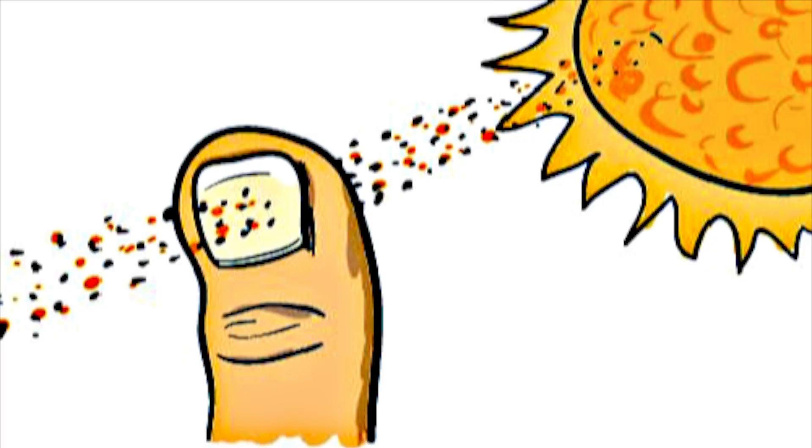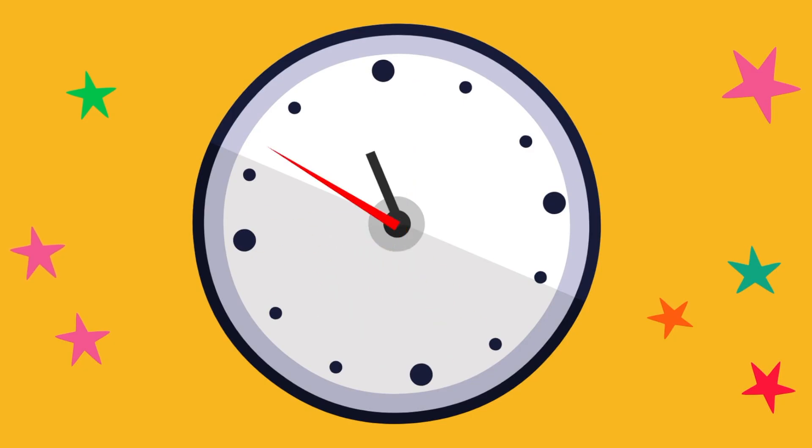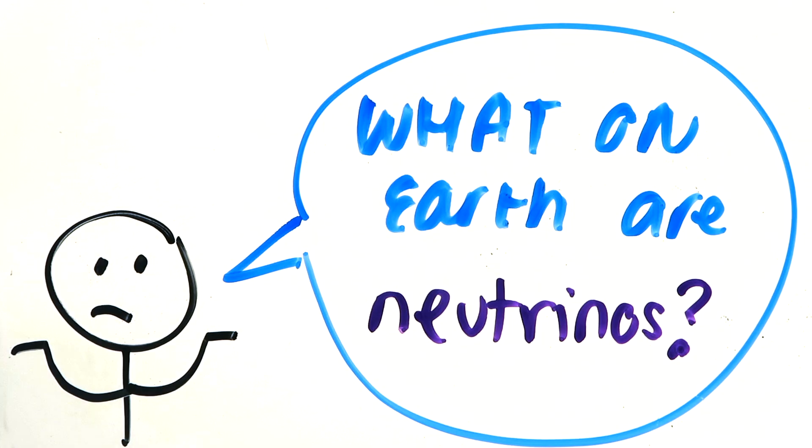Look at your thumbnail for one moment. 65 million neutrinos are passing through it every single second. But wait, what on earth are they?